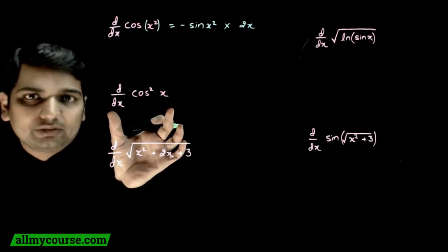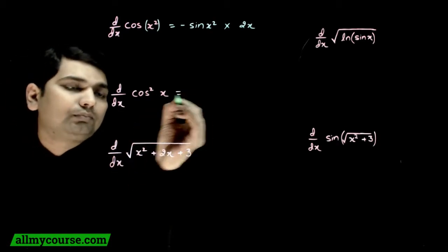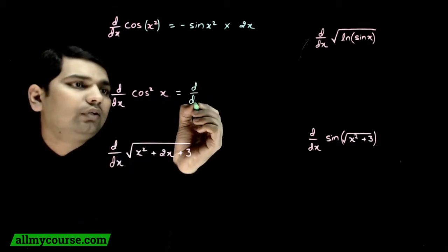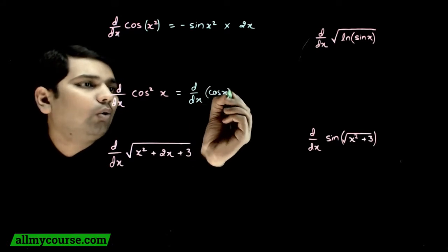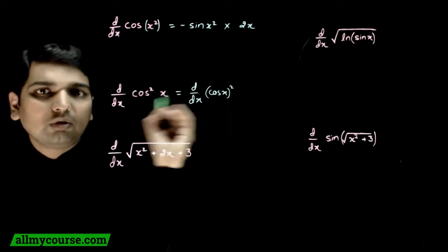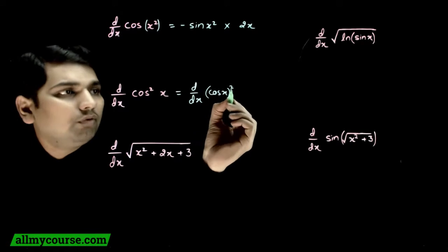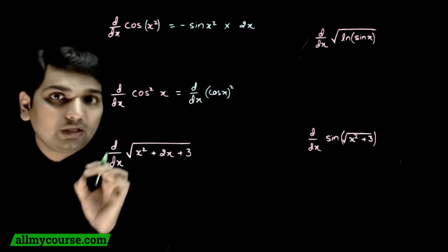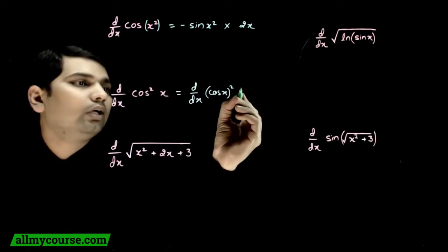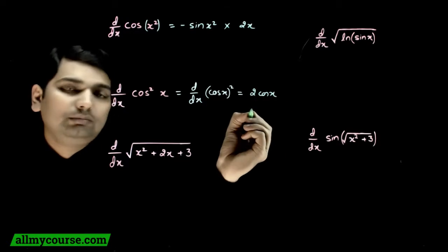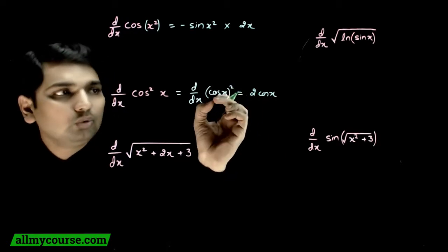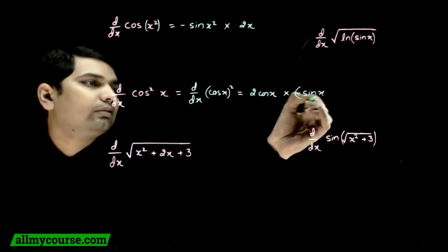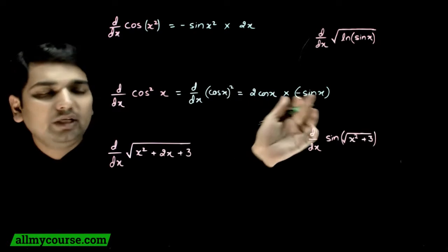Agla example hai cos²(x) — differentiate kiya jaye. Yahan par stuff kya hai? To cos²(x) ko aap likh sakte ho as (cos x) whole square. Aap dekh sakte ho yahan par square function ke andar cos hai. First of all, we don't have to worry about kya square ke andar hai — humein dekhna hai square ko kaise differentiate karte hain. x square ka differentiation hota hai 2x, isliye (cos x)² ka differentiation kya hoga: 2 cos x, multiplied by cos x ka khud ka differentiation, that is minus sin x. To yeh aapke cos²(x) ka differentiation ho gaya: minus 2 sin x cos x.